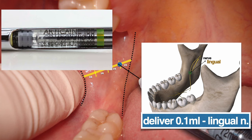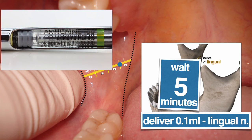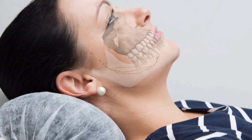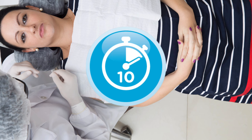At the end of depositing the entire content of the cartridge, the needle can be completely removed and you will wait for the onset. How long should you wait? At least five minutes, ideally 10 or even 15 minutes. This is where most dentists make mistakes — they perform the technique and already try to start the procedure right after the first numbness of the lips.